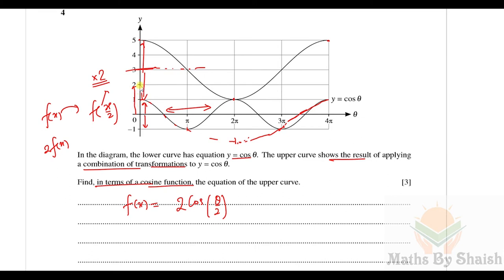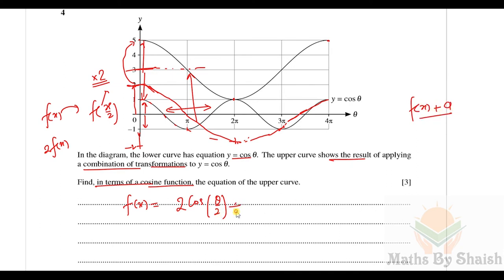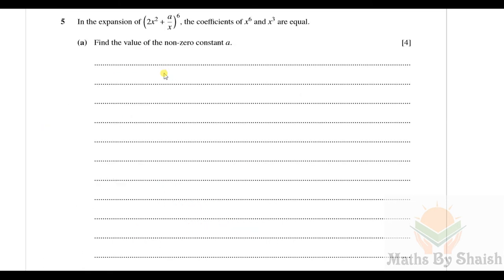The curve has also been translated vertically upward. It was earlier reaching −2, but now the minimum is at 1 and the maximum is at 5, indicating a vertical translation of +3. So the equation of the upper curve is y = 2cos(θ/2) + 3. I hope that is clear.